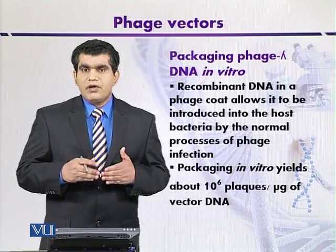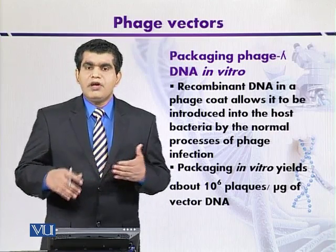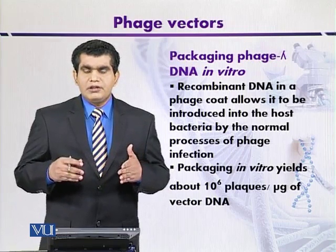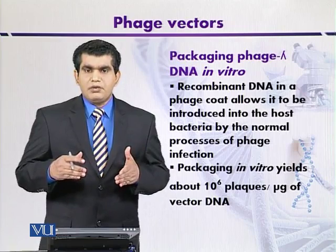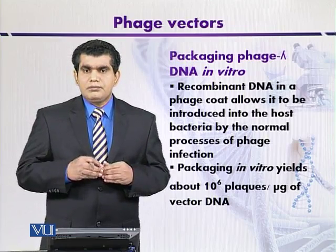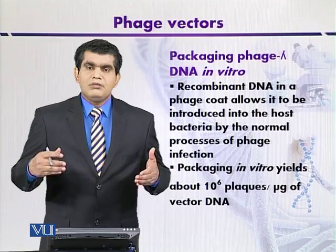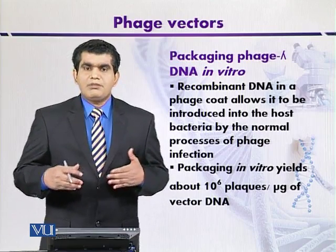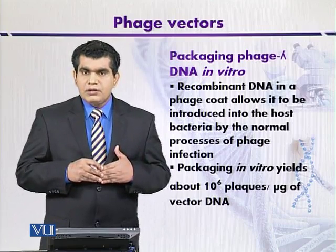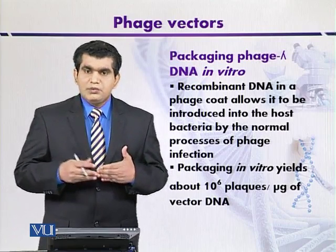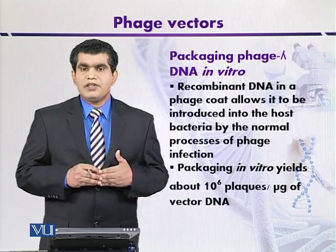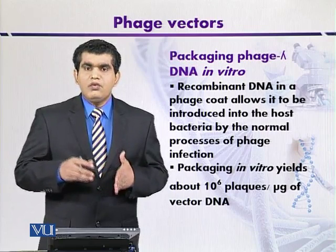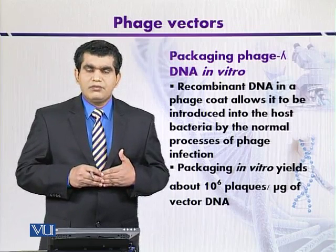Another reason for low frequency of plaque formation when we use modified lambda phages is that the DNA fragments produced are very large — their size may be more than 54,000 base pairs — and these cannot be packaged into the phage head. In this situation, non-viable phage particles are produced, resulting in low frequency of plaque formation.